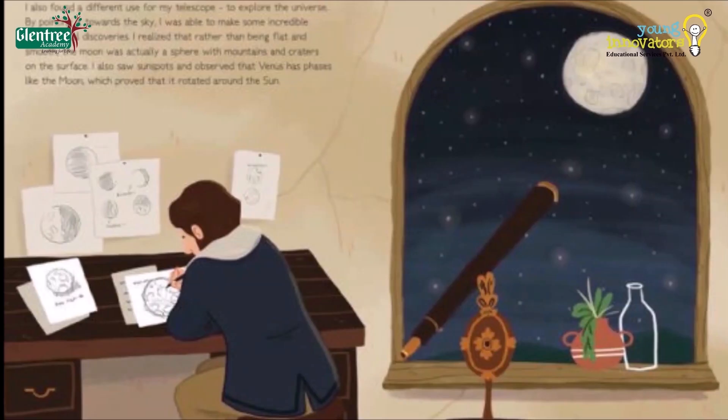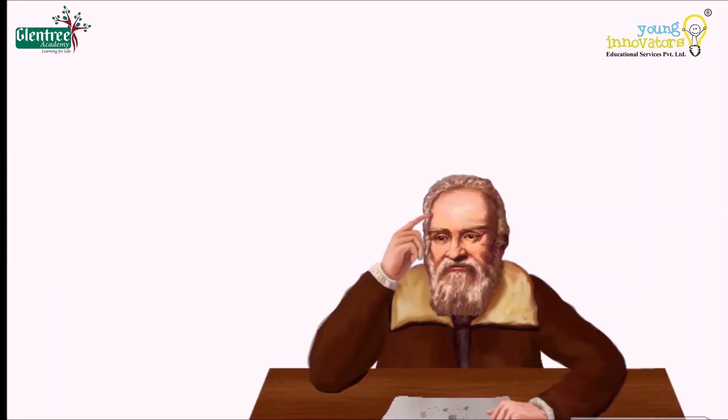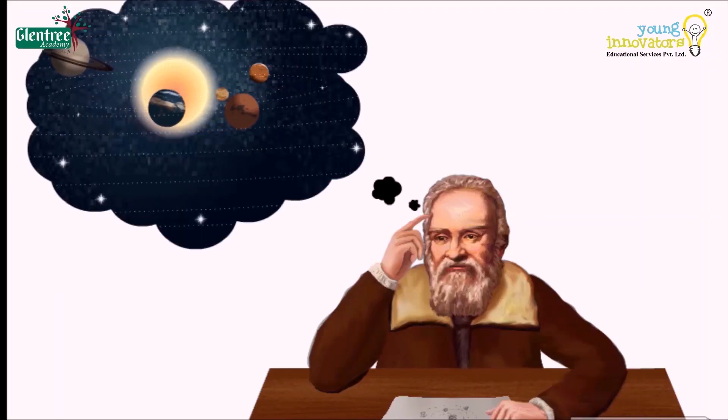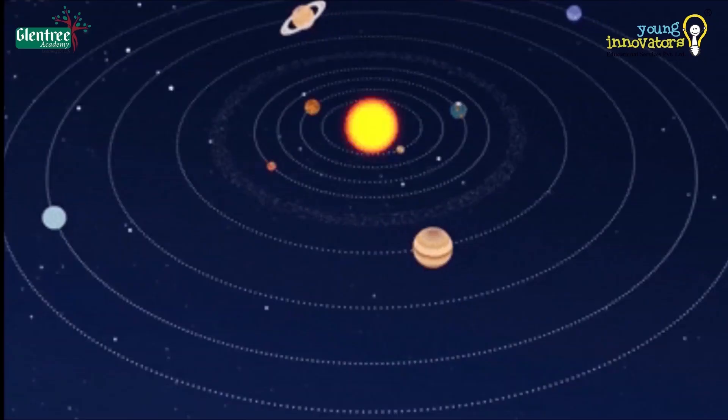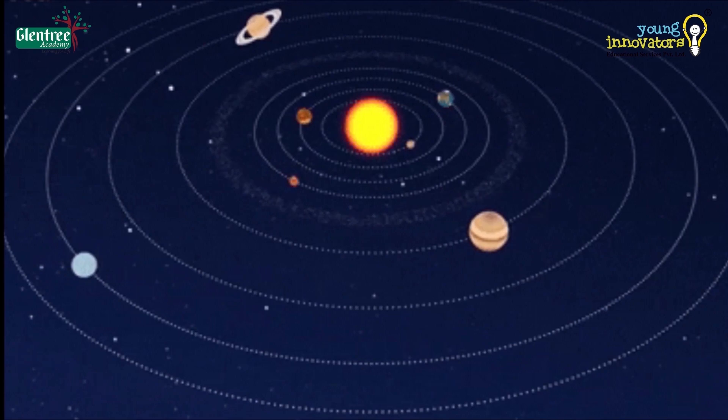He quickly noted it and started to observe all the bright planets and provided enough evidence to prove the theory of Kepler. Sooner, we could believe and understand that all objects were going around the sun in an almost circular path called solar system.